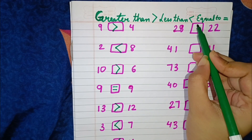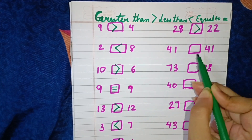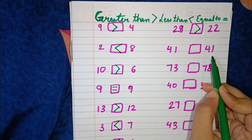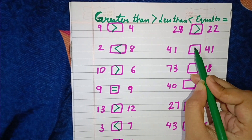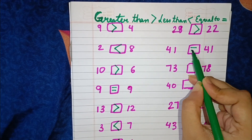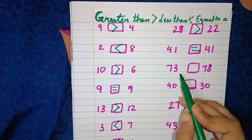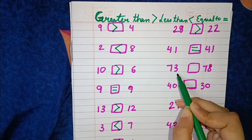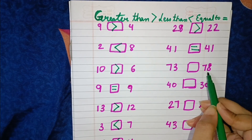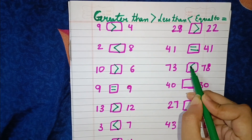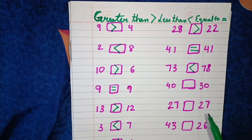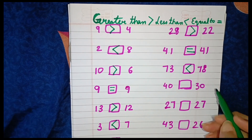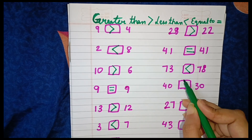Now we have 73 and 78. We know that 73 is smaller than 78, so we will put here the less than sign. Now we have 40 and 30. So 40 is greater than 30, so we will put here the greater than sign.